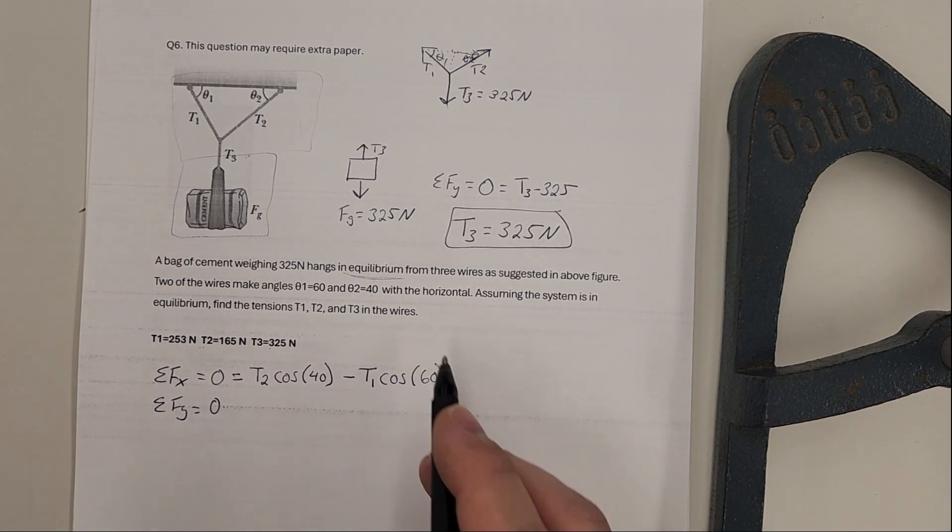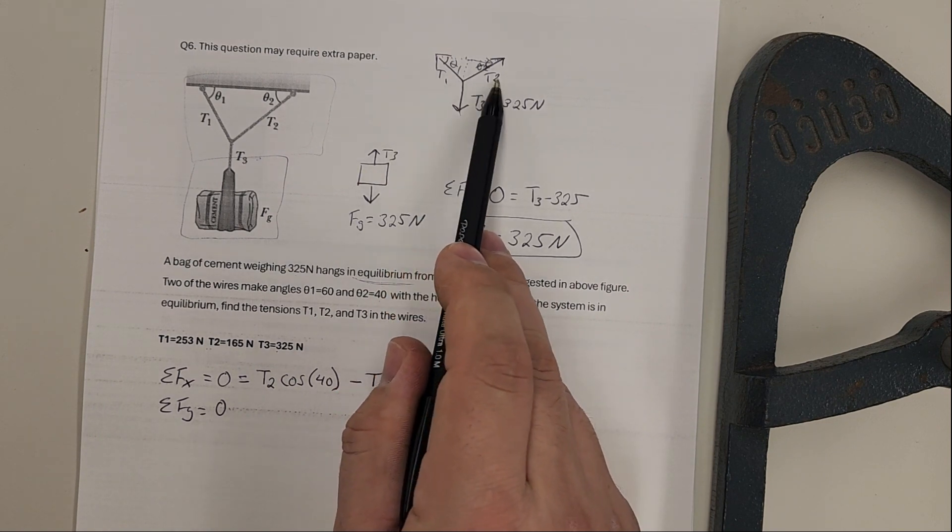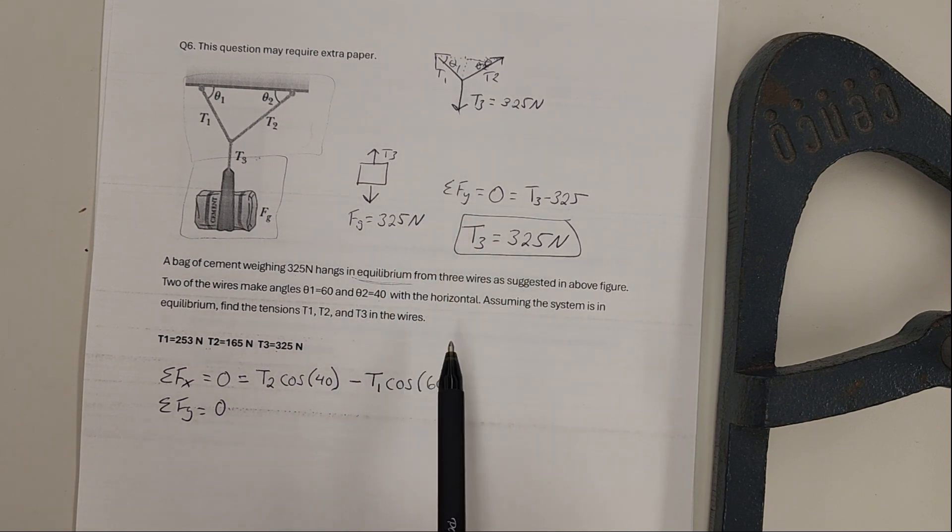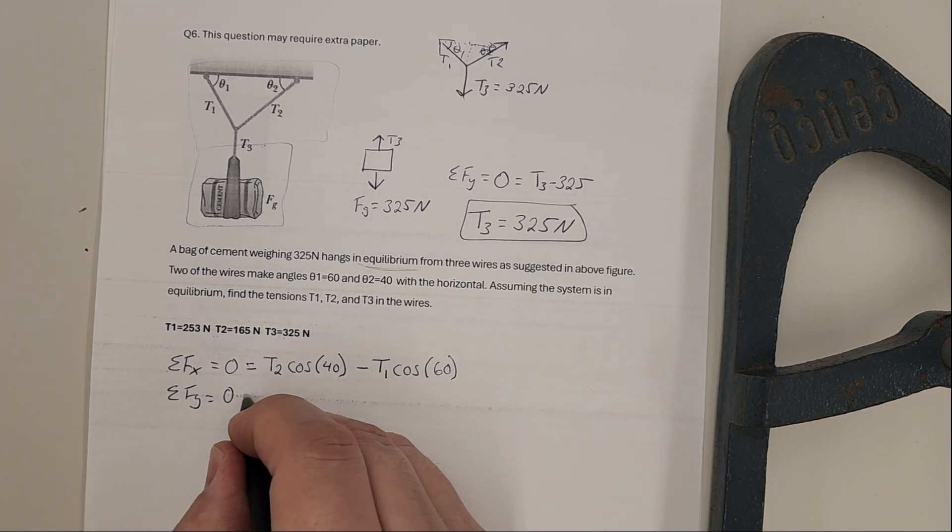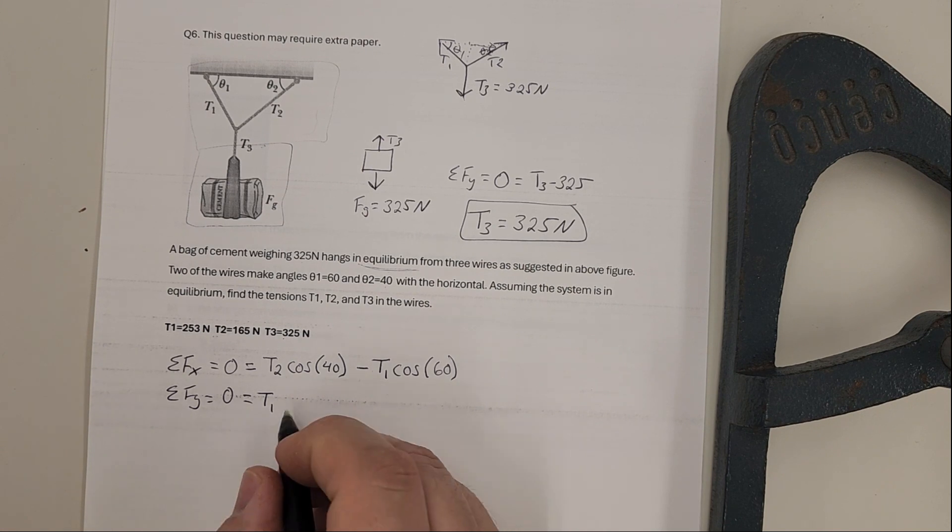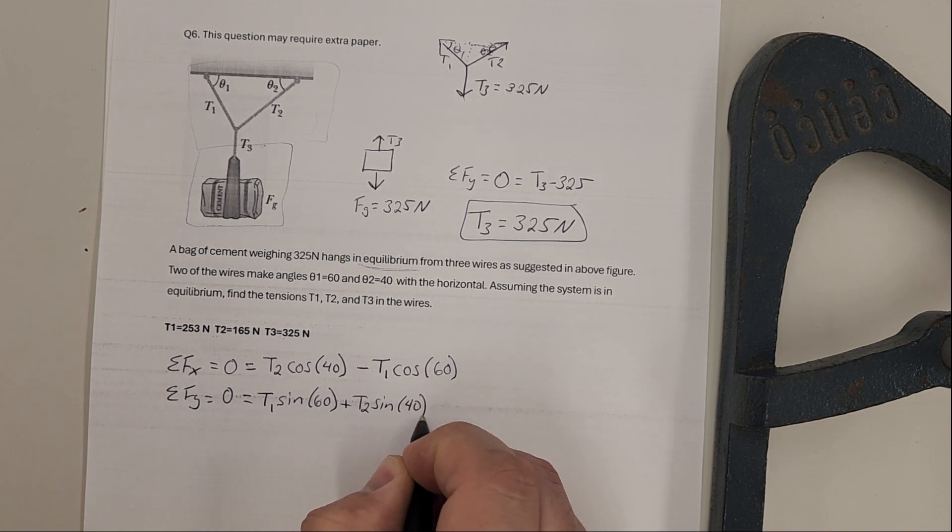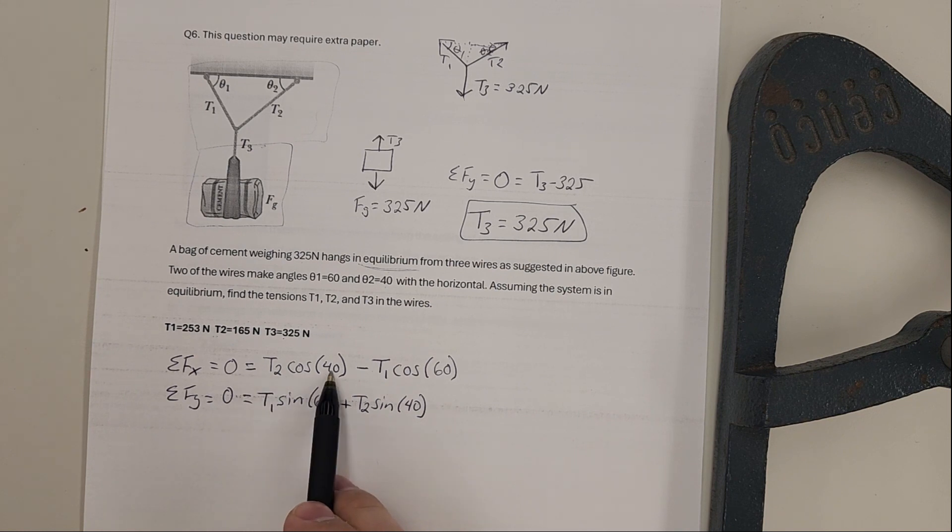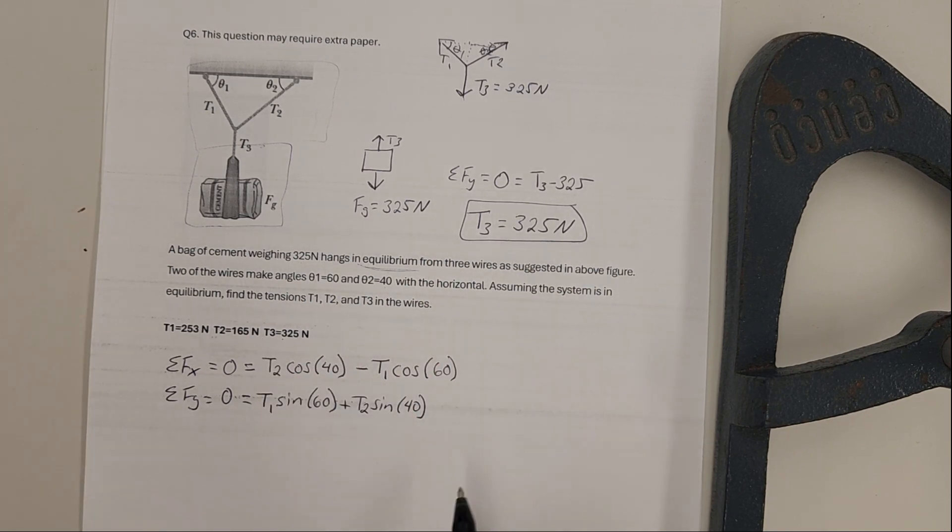For the y's, I have T3 pointing downward, and both T1 and T2 have an upward component. I'm going to have T1 sine of 60 plus T2 sine of 40. Every time there's a T2, we're using 40. Every time there's T1, we're using 60. So these two components are pointing upward from these two vectors.